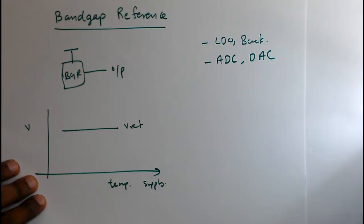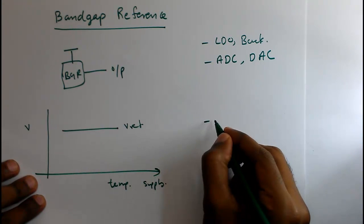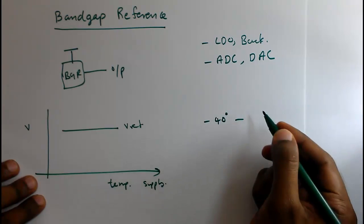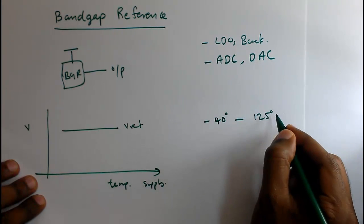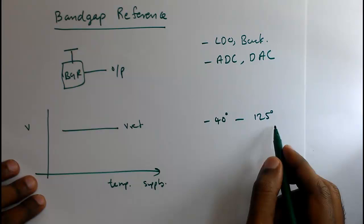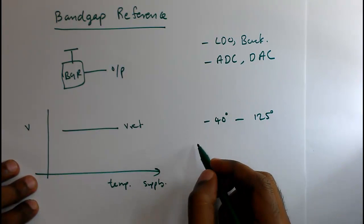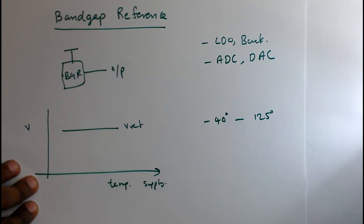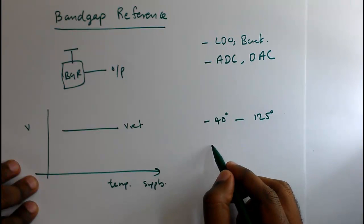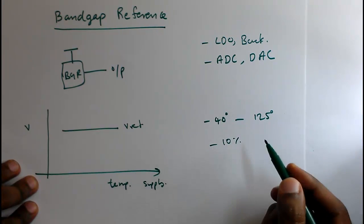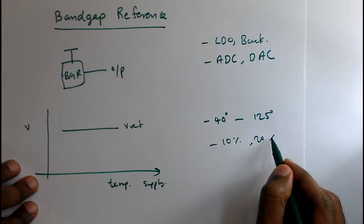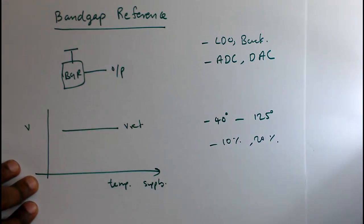Generally, the industry standard temperature variation is minus 40 degrees to 125 degrees, so we should expect this much variation in temperature. Supply variation depends on application to application. In some applications, supply variation will be 10 or 20 percent. But in regulators like a buck converter, supply variation will be very much larger.